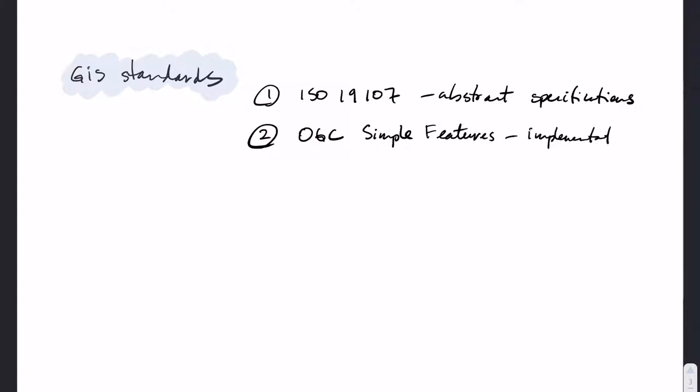In GIS, there are international standards that define what a polygon must be. We have, for example, ISO 19107 and also the OGC simple features. Both these standards are aligned and they allow us to define clearly what a polygon is.